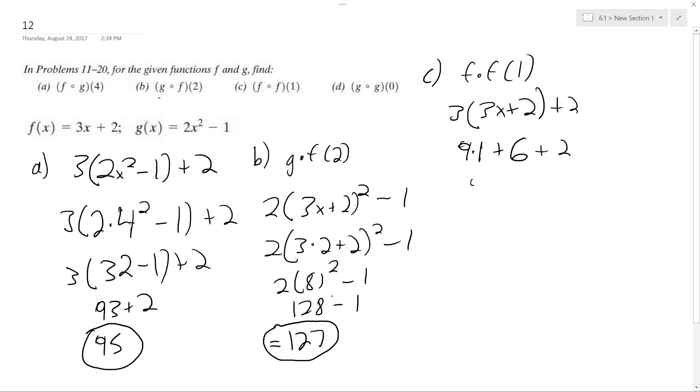So we get 9 plus 7, which is equal to, actually this is 8, 17.